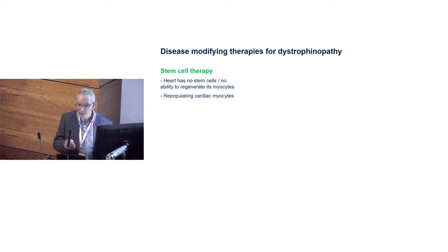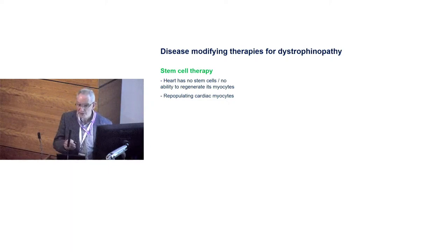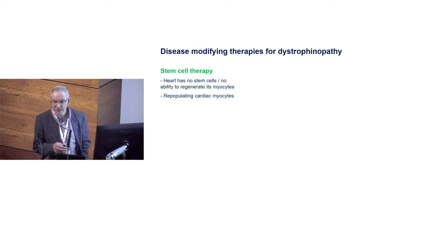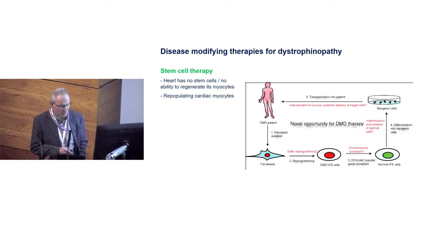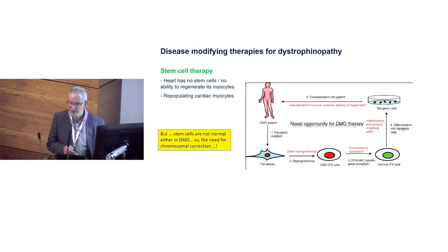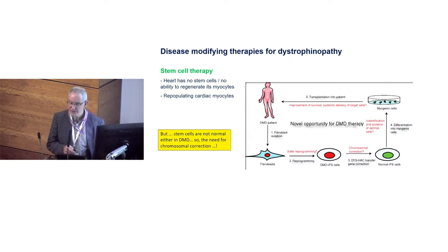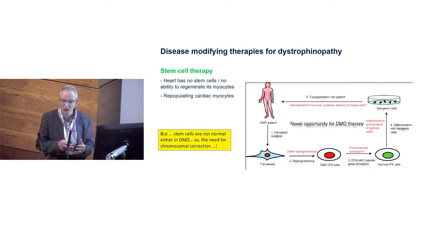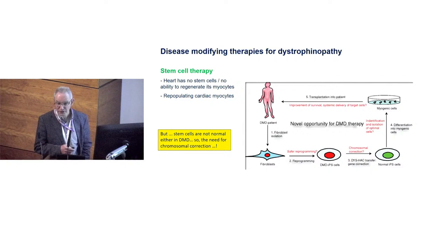Finally, there is stem cell therapy — taking stem cells and injecting them into the myocardium. But it's become clear that stem cells in Duchenne are not normal themselves, so they need to be transformed to function as anticipated before implantation — and that's at an even earlier stage. My reason for running through these disease-modifying therapies is to show how far advanced they are, based on the fuller understanding of cardiac and skeletal muscle dystrophinopathy.